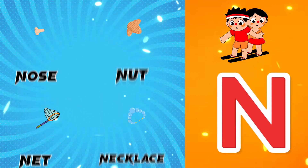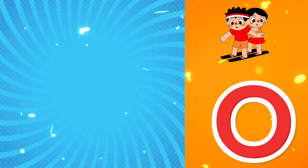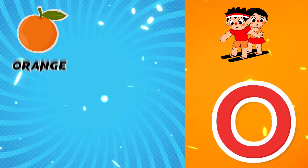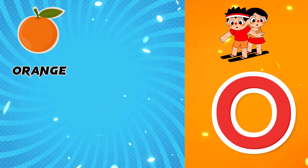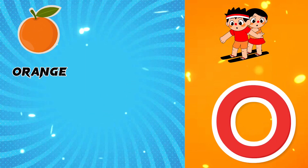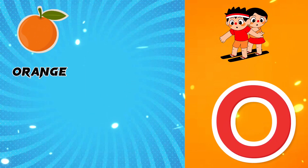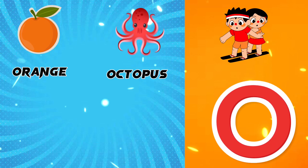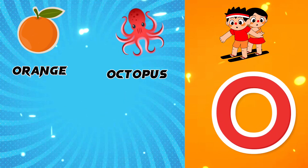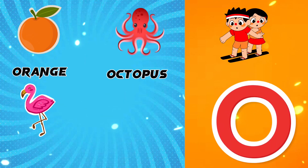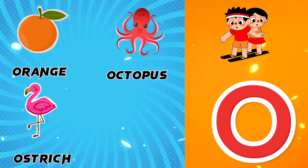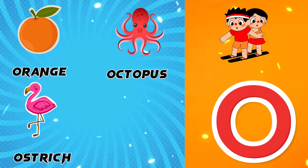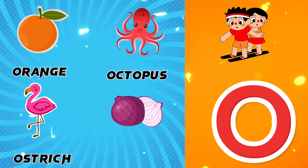O is for Orange. O is for Octopus. O is for Ostrich. O is for Onion.